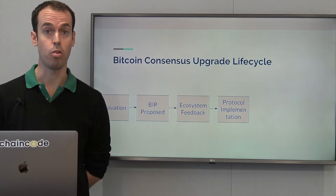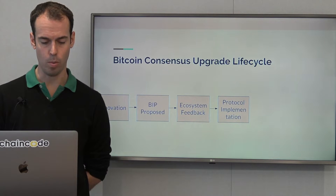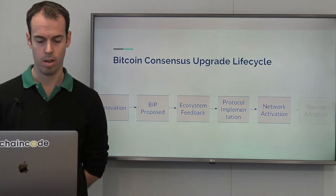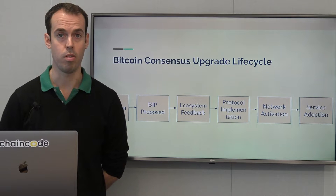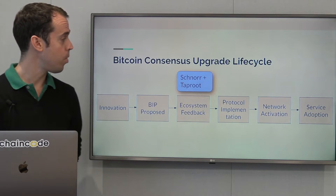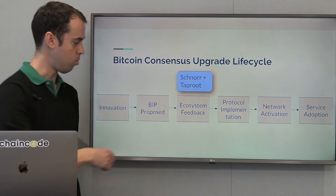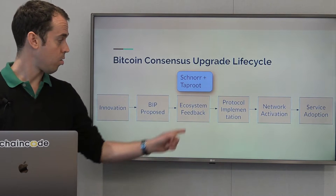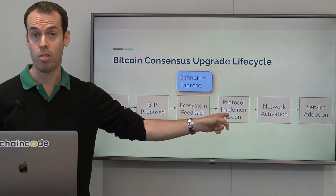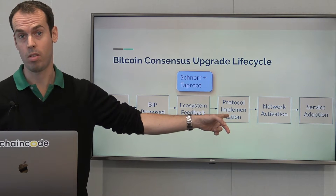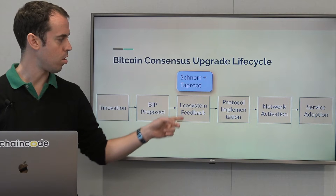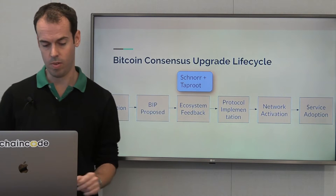Then at some point there'll be a protocol implementation in Bitcoin Core, and then hopefully that change will be activated on the network, and finally Bitcoin services will adopt the change. Where are we with Schnorr and Taproot? Well, this is more of a cycle — ecosystem feedback feeds back into a BIP proposal. We currently have a reference implementation, which is not the final implementation, but it's a demonstration of how this might work. These all feed into each other, so we're somewhere here in the ecosystem feedback process.